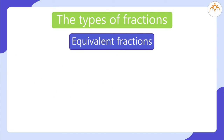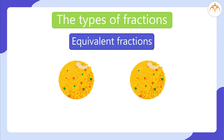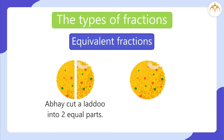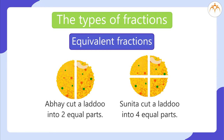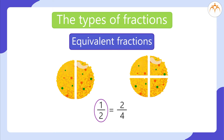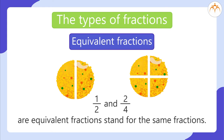Equivalent fractions — let us take a simple example. Abhay cut a laddu into 2 equal parts and Sunita cut a laddu into 4 equal parts. Abhay ate 1 part out of 2 and Sunita ate 2 parts out of 4. They both ate equal parts, so 1 divided by 2 equals 2 divided by 4 — these are equivalent fractions.